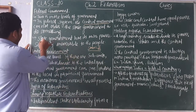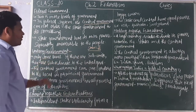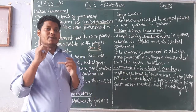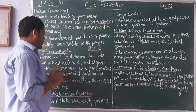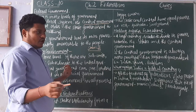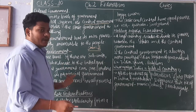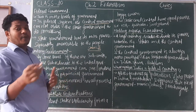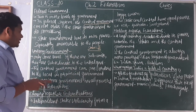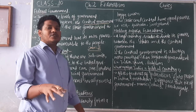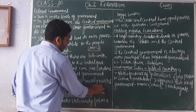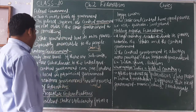Coming to another form of government — the unitary government — there will be only one level of government. There may be some provincial or local governments subordinate to the central government, but the national government has all the powers. All powers will be in the hands of the central government and they are answerable to the people.